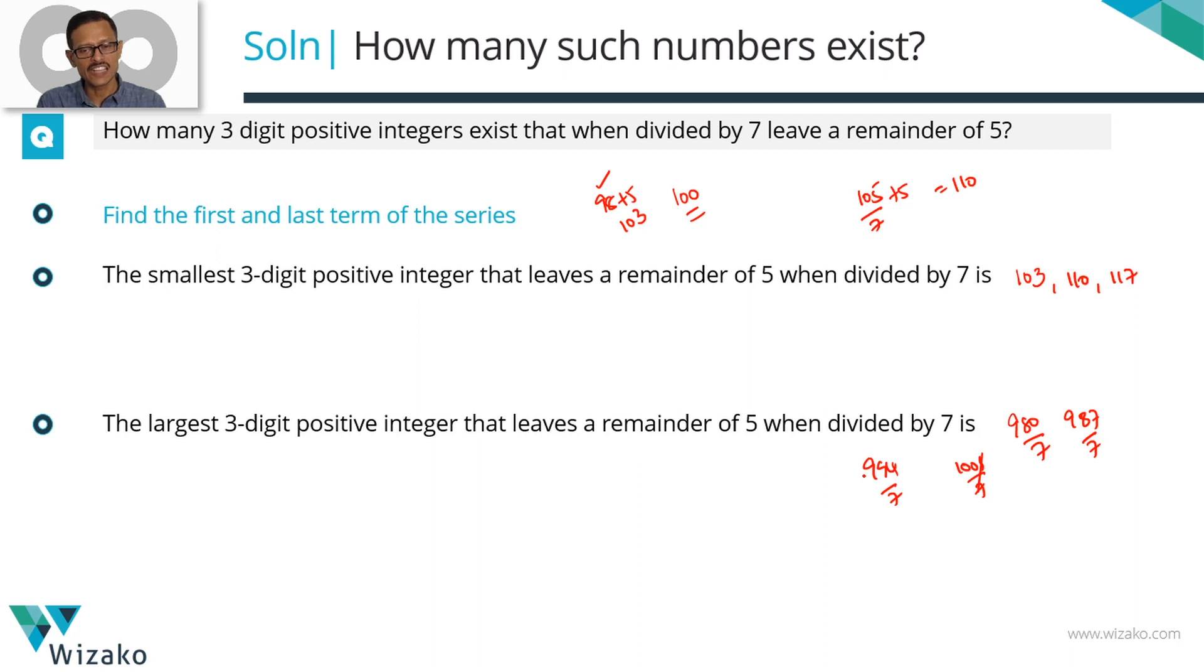So now what do we have? We have a number that when divided by 7 should leave a remainder of 5 and should be the largest such 3-digit number. Let's look at what happens if it is 994 plus 5. 994 is divisible by 7. If I add 5 to it, 999 is the largest 3-digit number that will leave you a remainder of 5 when divided by 7. So you found out the first term, we have found the common difference to be equal to 7, and you found out the last term which is equal to 999.